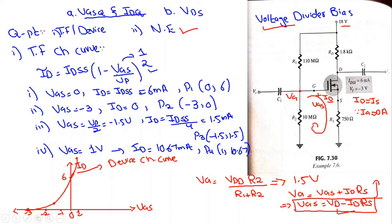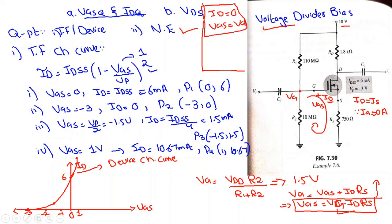From the network equation VGS = VG − ID×RS, we find two points. When ID = 0, VGS = VG = 1.54V. When VGS = 0, we get ID = VG/RS.